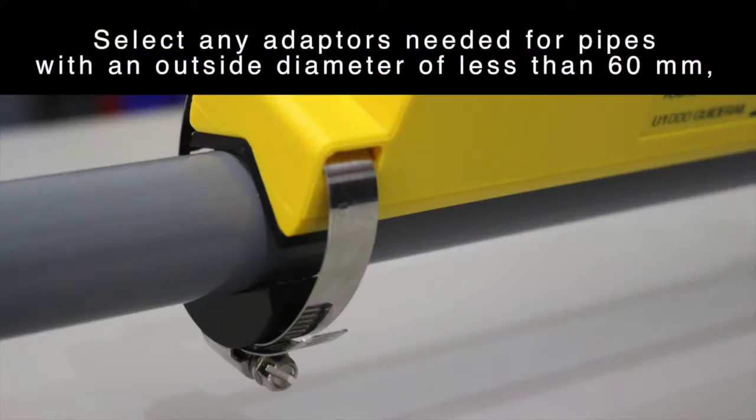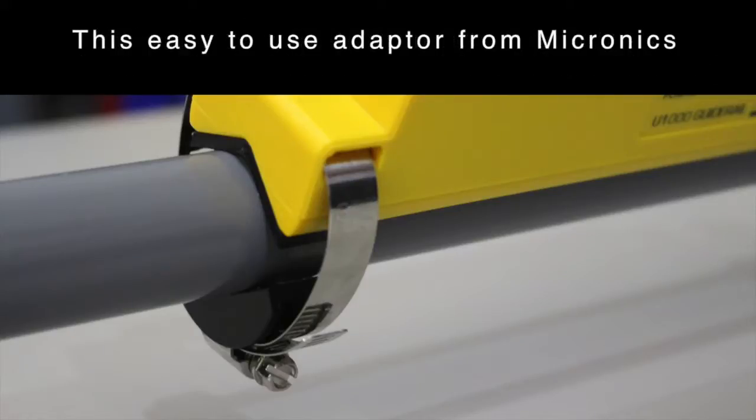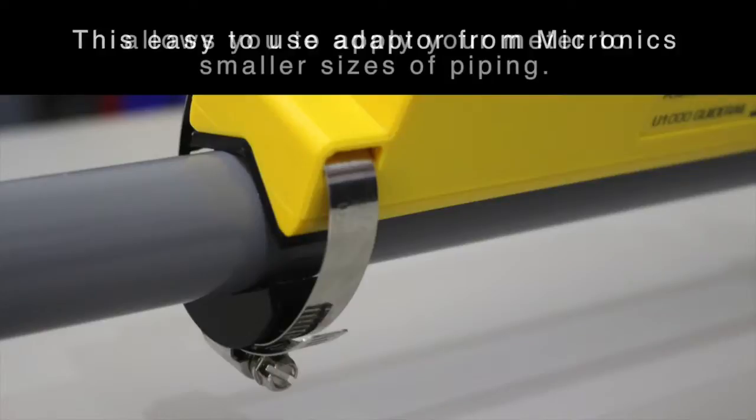Select any adapters needed for pipes with an outside diameter of less than 60mm. This easy to use adapter from Micronix allows you to apply your meter to smaller sizes of piping.